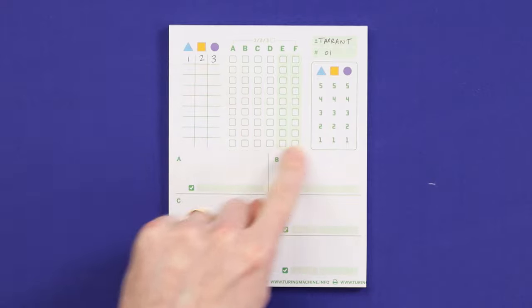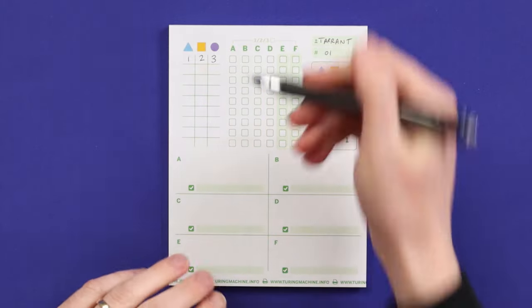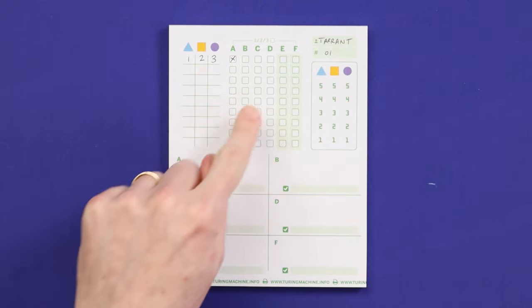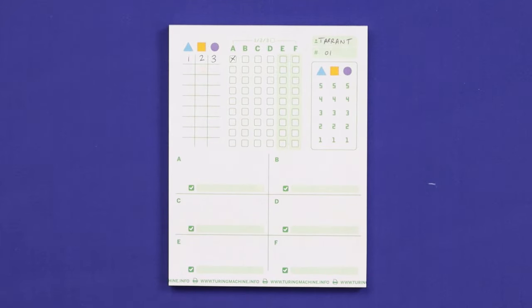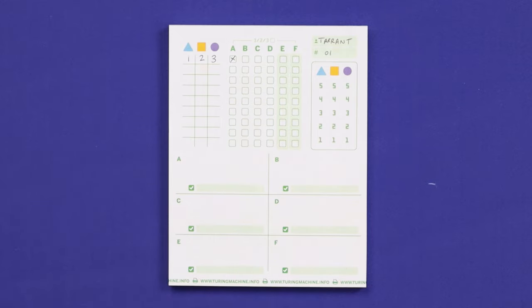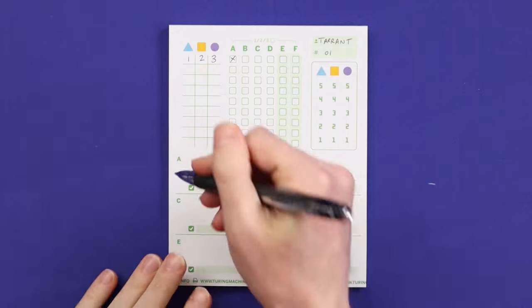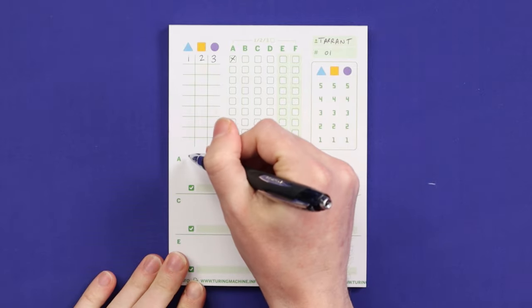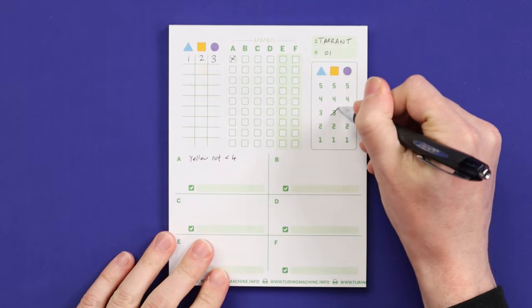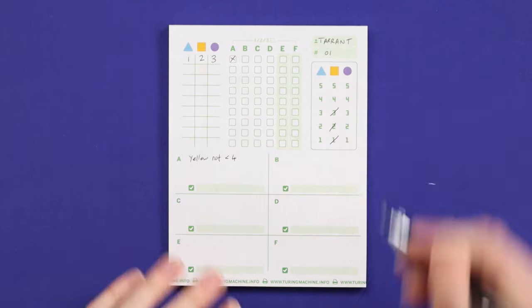Now record your raw answer in this grid. In this case it was question A and we got an X. It's important to do this because this counts the number of questions you've asked in each round and across the game. You can then record your findings in more detail down here. In this case we now know from clue A that yellow is not less than 4. You can also cross off impossible options in this grid.